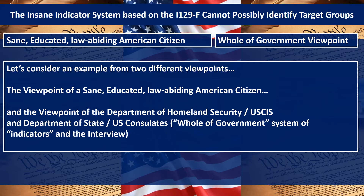Here's a graphic representation of how we see the system from two viewpoints. On the left: sane, law-abiding American citizens — most of the 330 million of us. On the right: the whole-of-government viewpoint, which we call arrogant, incompetent, and corrupt. If you watched videos one through four you would understand why we call them that — we have plenty of examples.